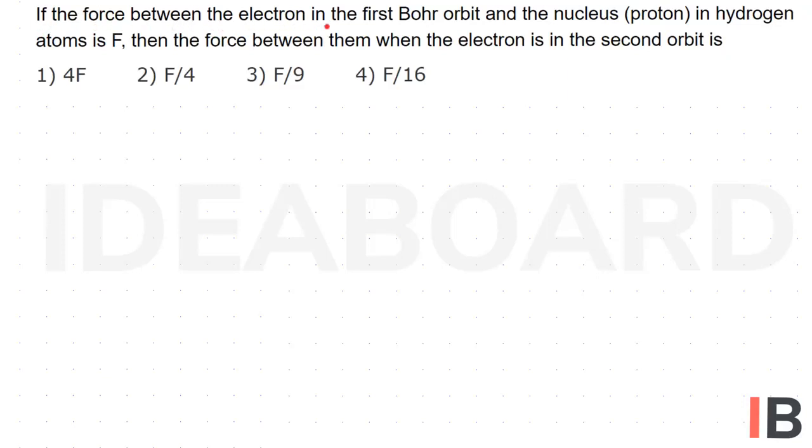If the force between the electron in the first Bohr orbit and the nucleus (proton) in hydrogen atoms is F, then the force between them when the electron is in the second orbit is: